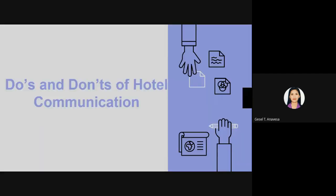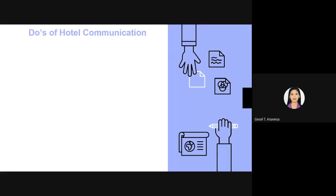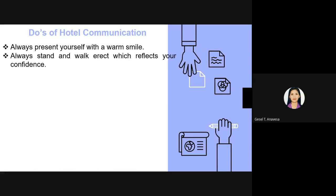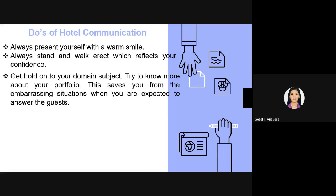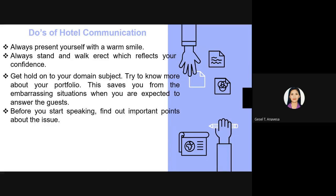Regarding the dos and don'ts of hotel communication: communication involves verbal language as well as body language. Always present yourself with a warm smile. Always stand and walk upright, which reflects your confidence. Get a good hold of your domain subject to avoid embarrassing situations. Before you start speaking, find out the important points about the issue.